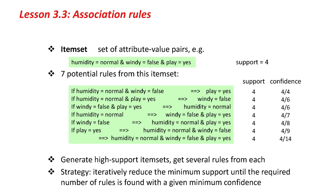If humidity is normal and windy is false, then play is yes — it's got a support of 4 and a confidence of 4 over 4, that's 100%, because all of the instances for which humidity is normal and windy is false have got play as yes. As we go down this list of rules, we get a lower degree of confidence. The last rule has nothing on the left-hand side, so anything implies humidity is normal and windy is false and play is yes — that's got a support of 4. But all 14 instances satisfy the left-hand side, so the confidence is 4 over 14. The confidence decreases from 100% down to 4 over 6 — that's 67% — down to quite a low value, 4 over 14.